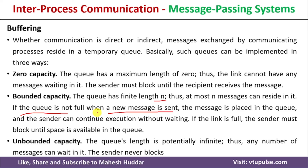The last type is unbounded capacity, where the queue's length is potentially infinite. There is no limit on the queue length, so any number of messages can be sent into the queue and they can wait for the receiver to receive them.